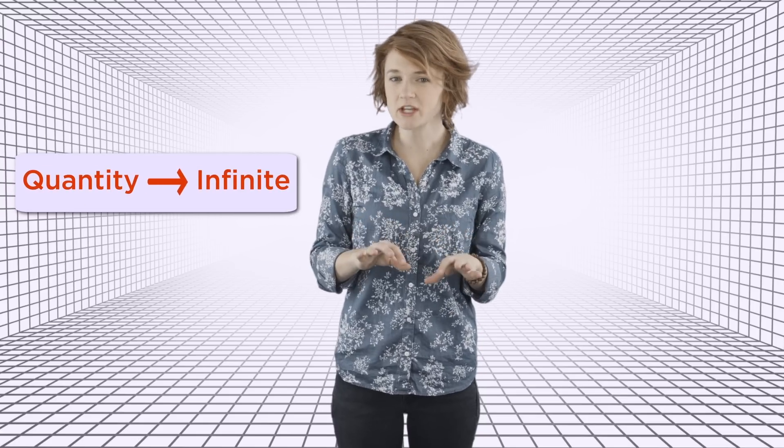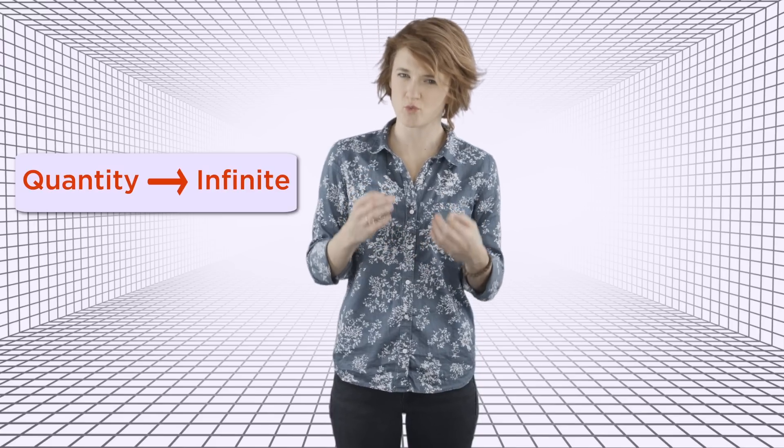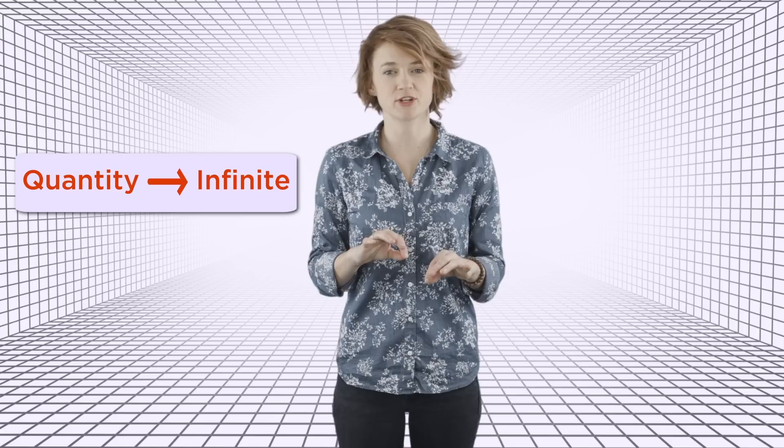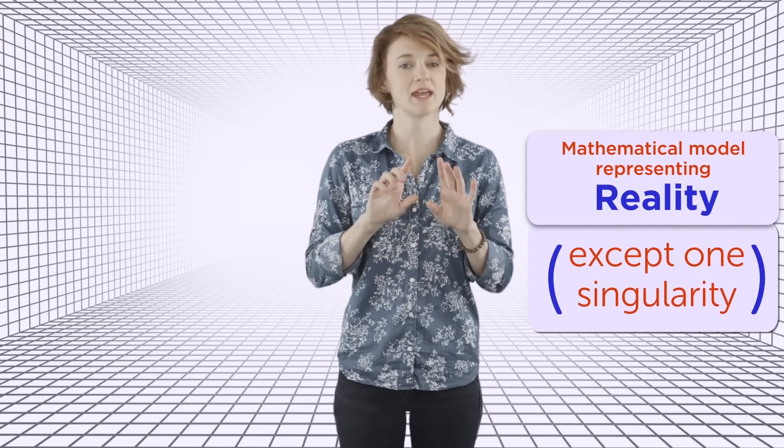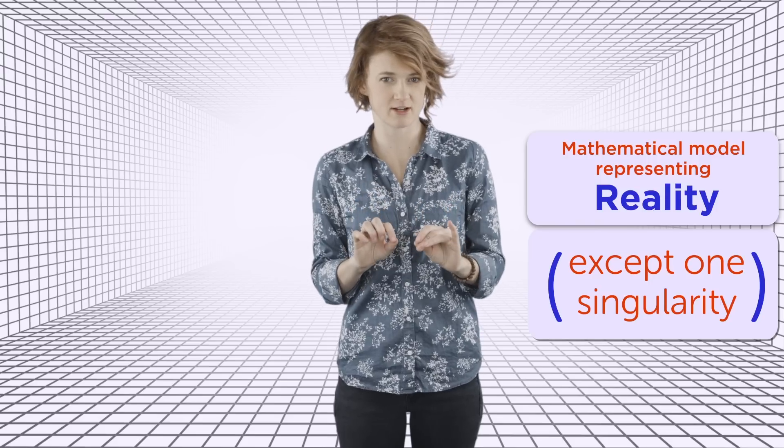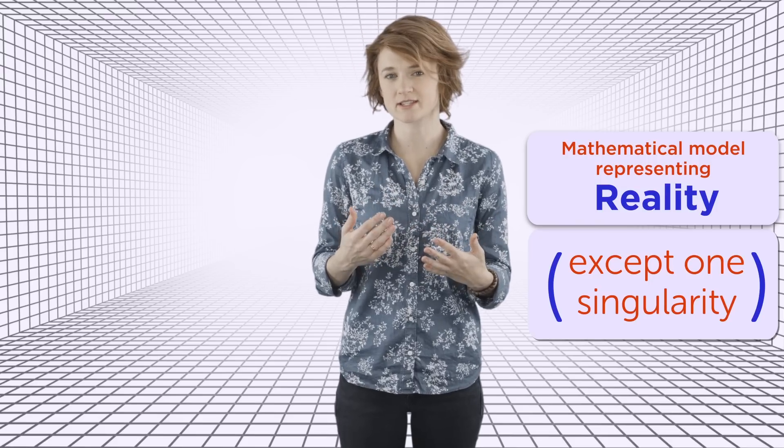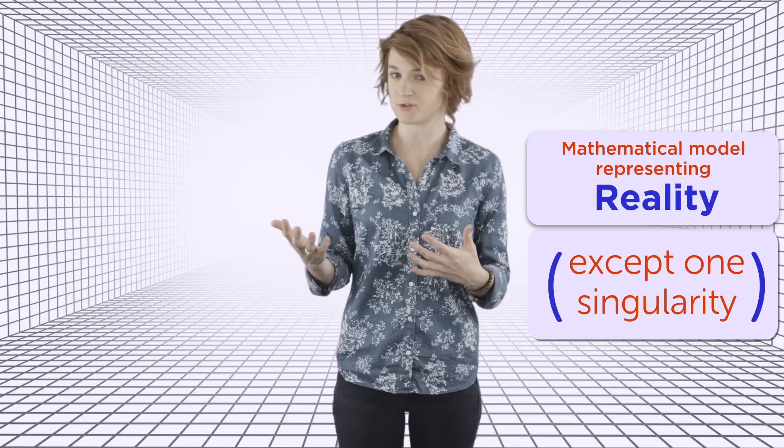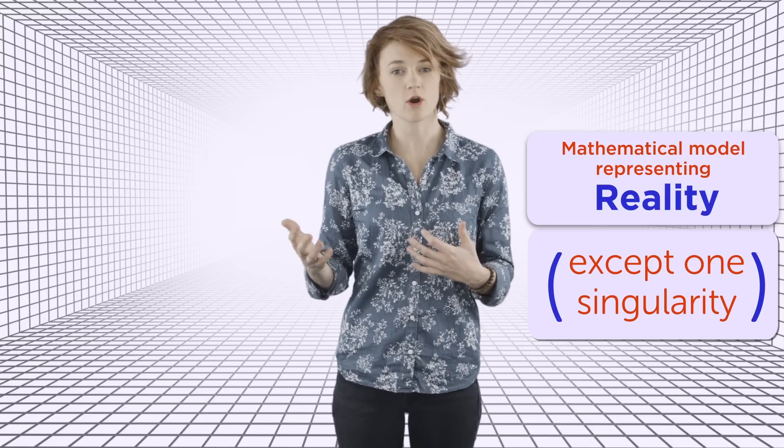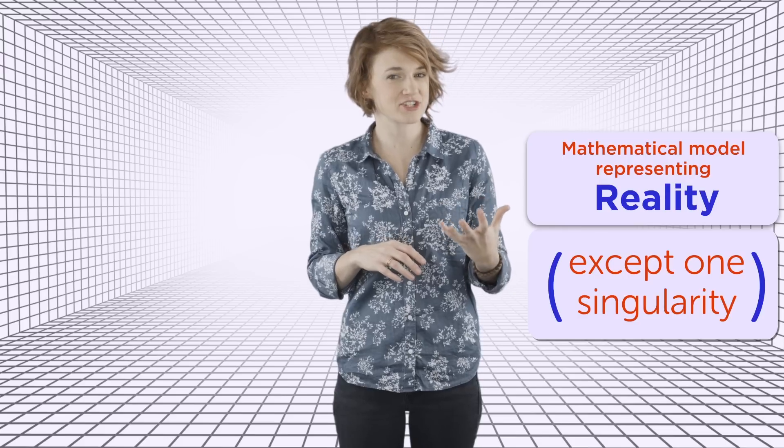But things get weird when that mathematical quantity is supposed to represent something in the physical world. It's often the case that a mathematical theory describes some aspect of reality extremely well, except for one pesky singularity. Then you're left with a choice. Admit that the math might not accurately describe reality if you look too closely or claim that reality actually has infinities. In some cases, it's not clear which one is the right choice.